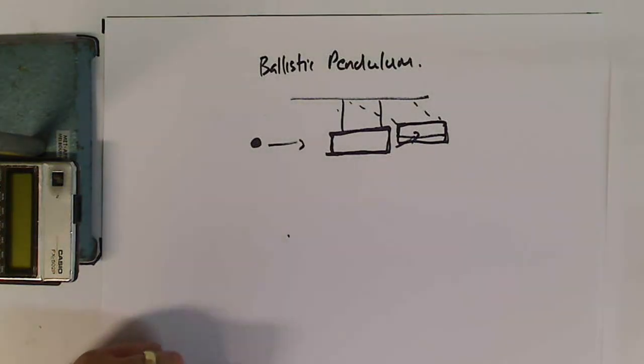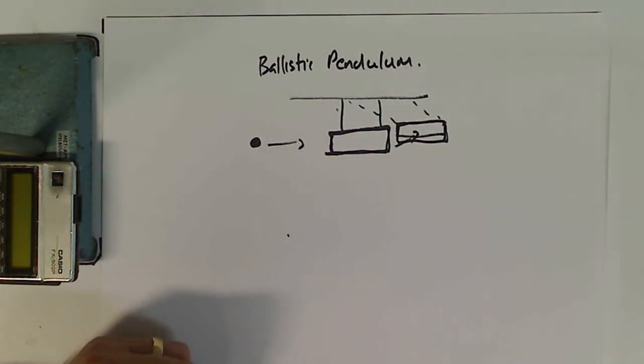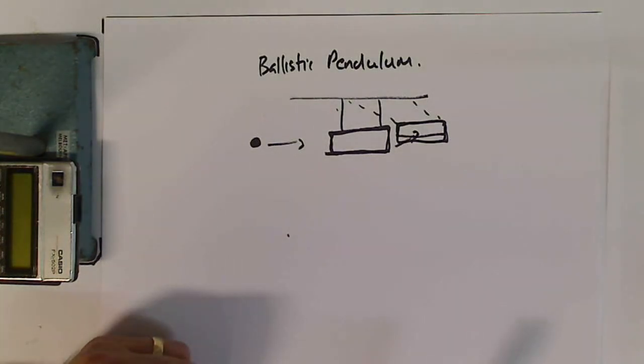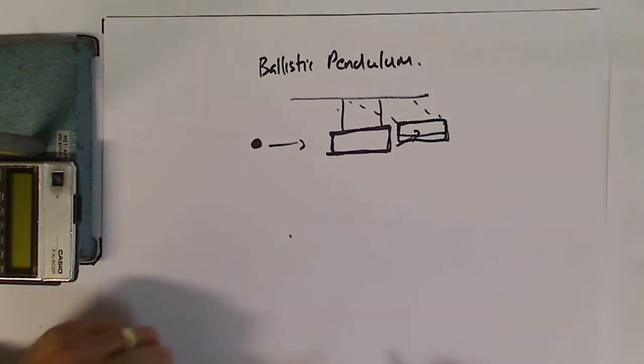So our goal here is to work out how high that block swings, or use how high it swings to give us a speed on this bullet or projectile. It's a nice way to work out a speed without actually measuring the speed, because you can measure the height much easier.